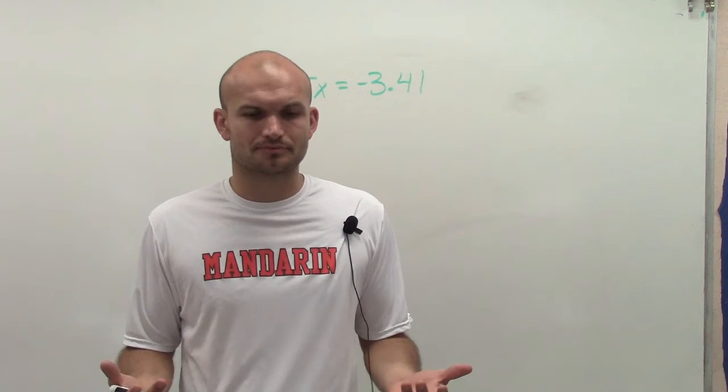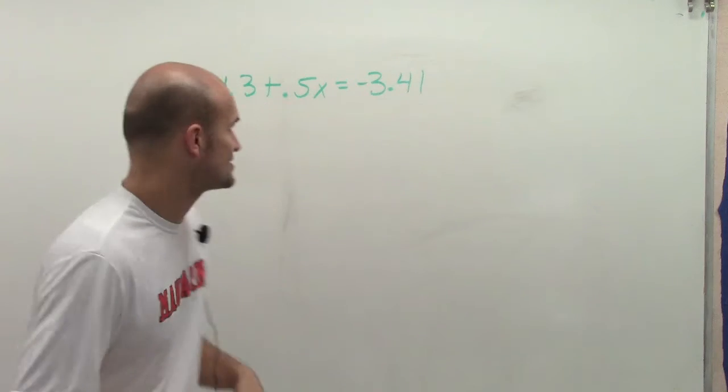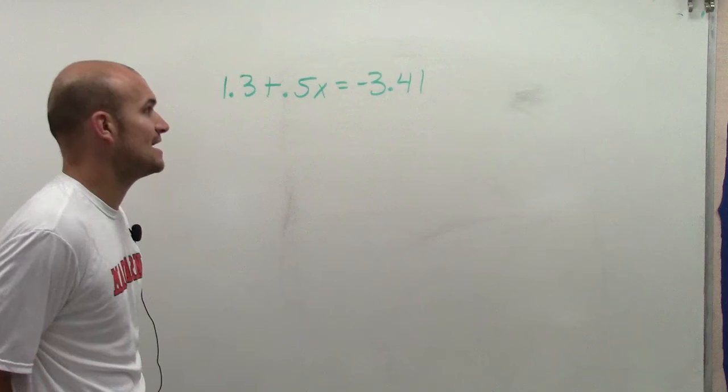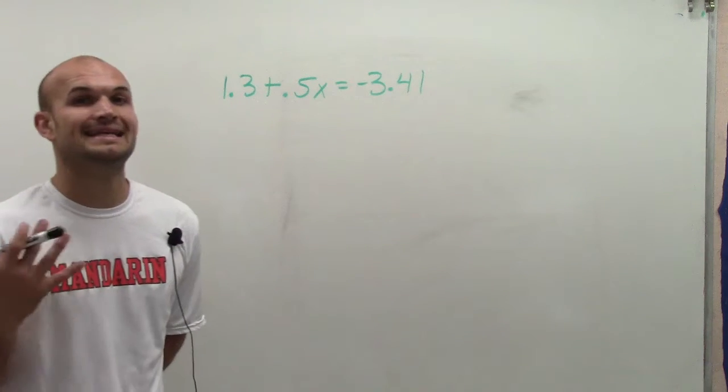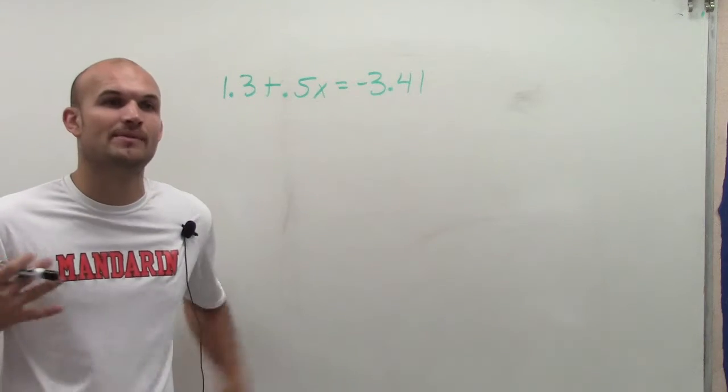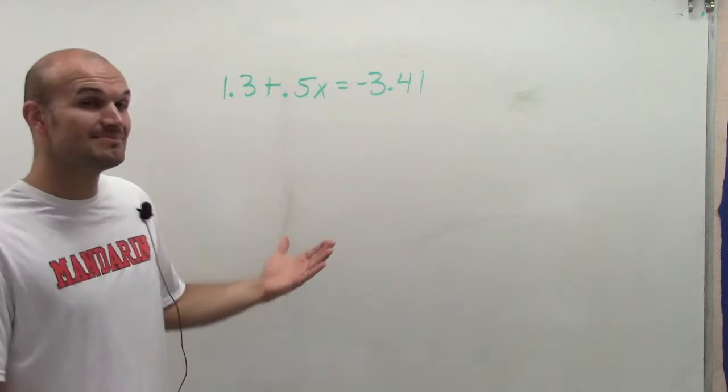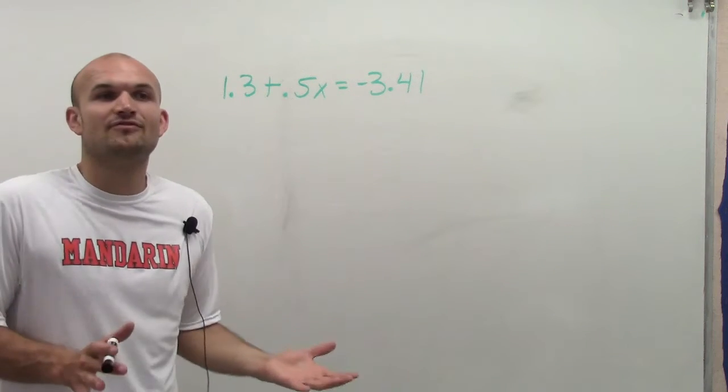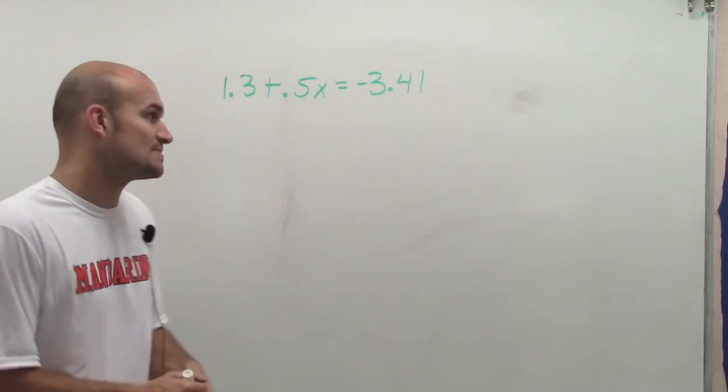Decimals are not going to change the way that we solve equations. So here I have 1.3 plus 0.5 times x equals negative 3.41. And again, I will show you another way to manipulate the equation so you're dealing with easier numbers, but sometimes your problem's not going to afford something that simple, so you should know how to just solve using decimals anyways.